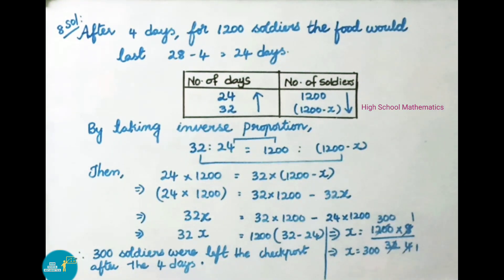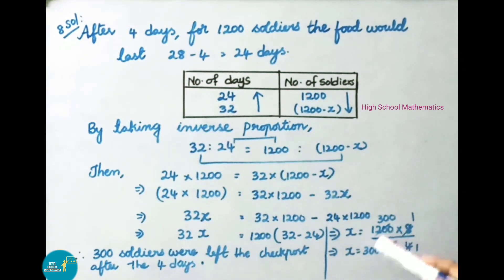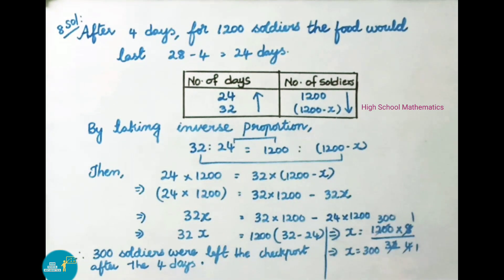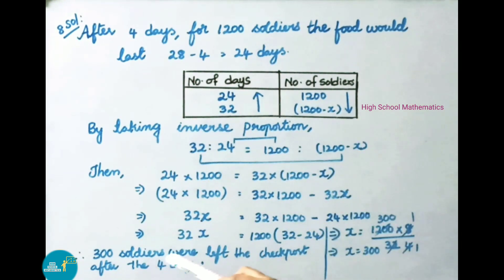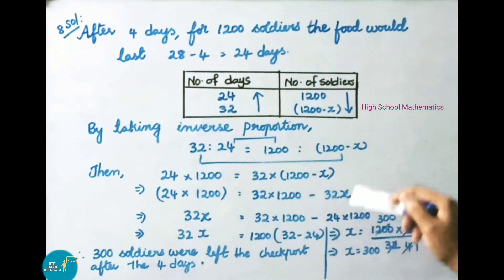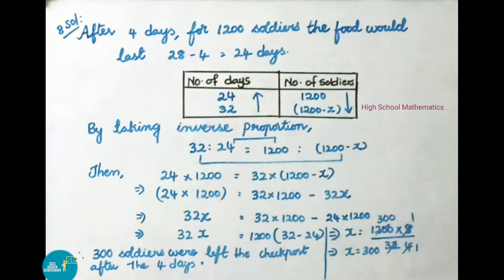That implies X is equal to 1,200 into (32 minus 24), that is 8, divided by 32. Simplifying: 8 divided by 32 gives 1/4, and 1,200 divided by 4 gives 300. Therefore, X value is 300. Therefore, 300 soldiers left the check post after 4 days. And 1,200 minus 300 is 900. Therefore, for 900 soldiers, the food lasts for 32 more days.